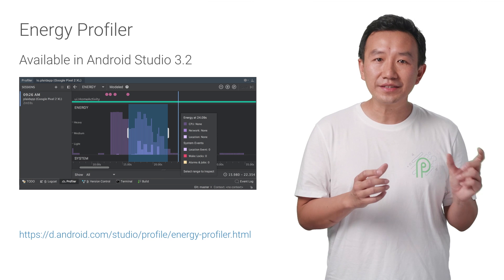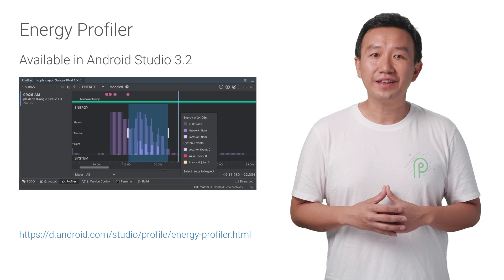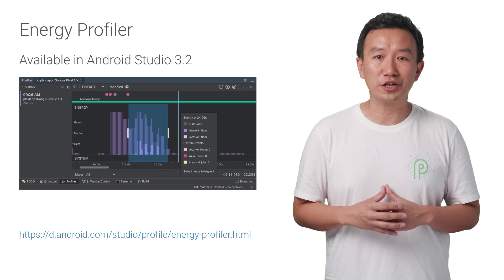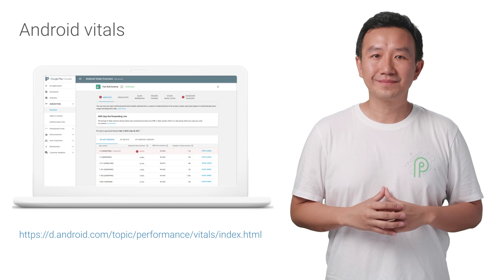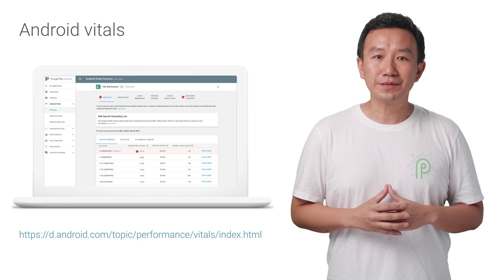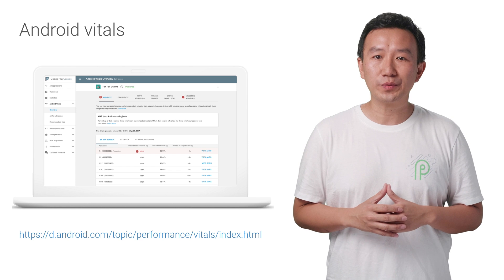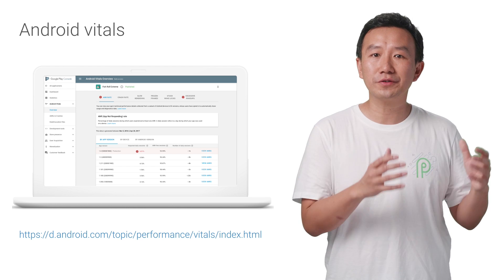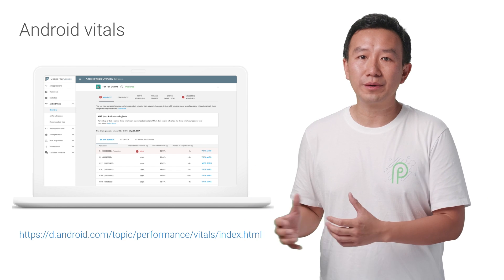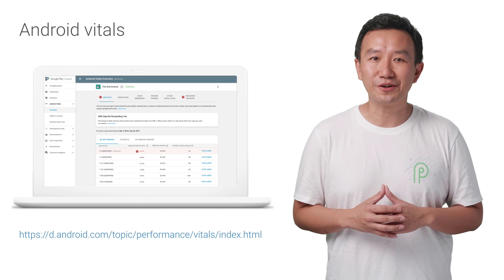The Profiler also estimates your app's energy usage of CPU, network, and location resources. Refer to the Energy Profiler documentation for more details. In the Play Developer Console, Android Vitals exposes performance metrics tightly associated with battery usage, which includes excessive wake-ups, stuck wake locks, and background network access. Refer to the Vitals documentation for more detail.